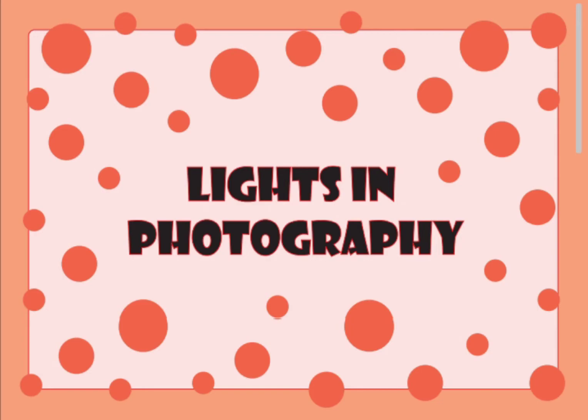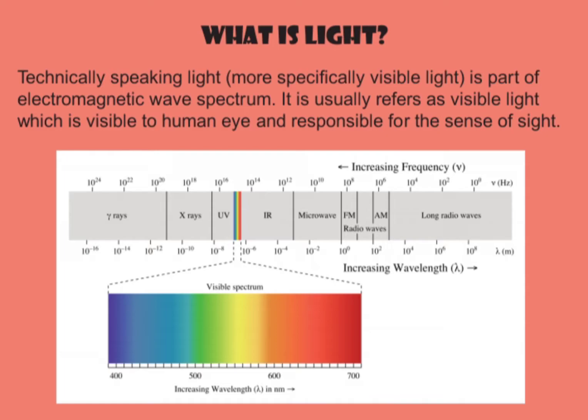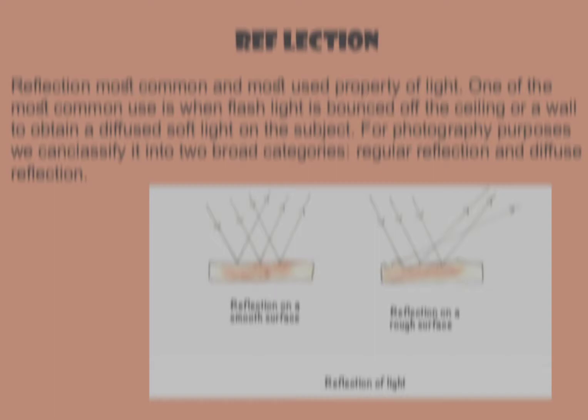Hi and assalamualaikum guys, today I'm going to talk about lights in photography. Technically speaking, light — more specifically visible light — is part of the electromagnetic wave spectrum. It is usually referred to as visible light, which is visible to the human eye and responsible for the sense of sight.